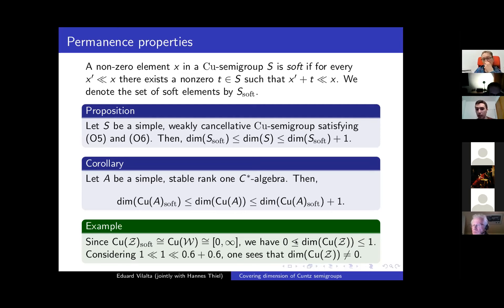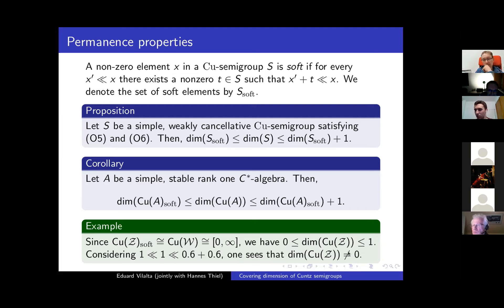A question was raised about where the calculation that the dimension is not zero came from. The speaker acknowledged that a proper calculation wasn't presented today, noting it had been covered on Friday. The soft elements CU semi-group approach shows the dimension is not zero, so it must be one. Another way of showing it will be given later using the nuclear dimension bound. So the dimension of Cu(Z) is either zero or one, and there are two ways of showing it is not zero.